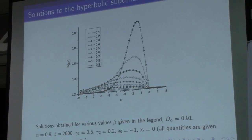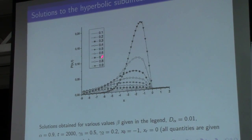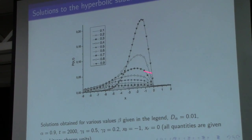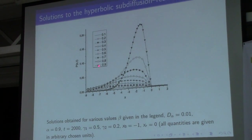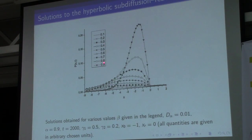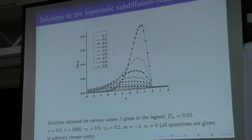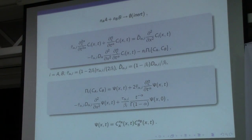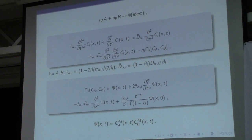This plot shows that the solution strongly depends on the parameter beta. For various values of beta, there are shown different curves. We can generalize this equation, using the methods of the previous case, to the non-linear form.